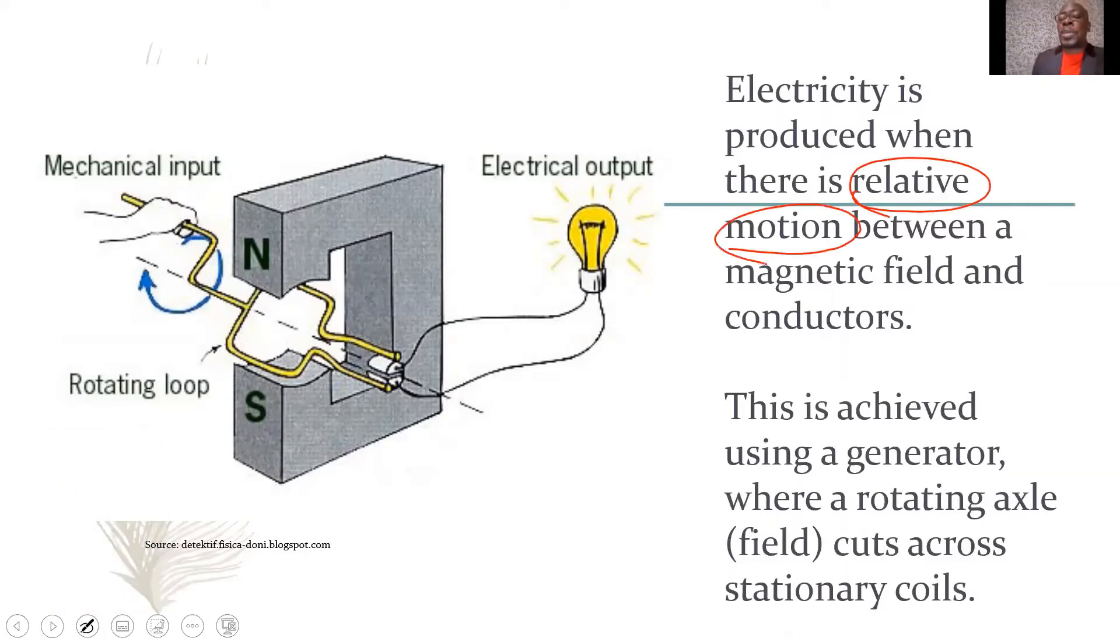Motion between the magnetic field. This is our magnetic field or that produces our magnetic field. And here's our conductor. So, the generation will be produced whether I rotate the magnetic field or I rotate the conductors, which is why we use the term relative motion.